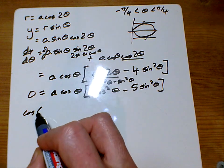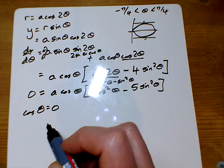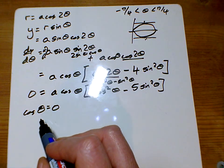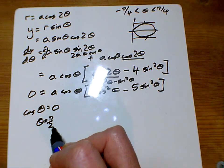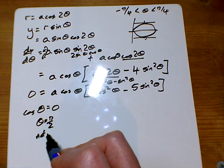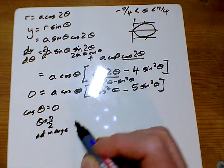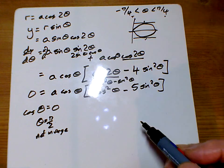So option 1 is cos θ equals 0. So if cos θ equals 0, then θ equals π over 2. And that's not in the range we want. So we were only going from that range there.